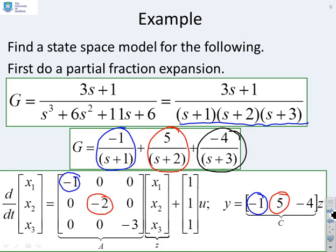And finally, the minus 4 over s plus 3, that's got a pole at minus 3. So the minus 3 is in the 3,3 position, and the corresponding residue is in the third position of C. So hopefully you can see that once you've done the partial fraction expansion, defining the A matrix, the B matrix, and the C matrix is straightforward.